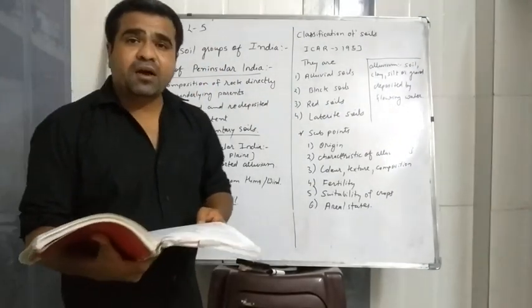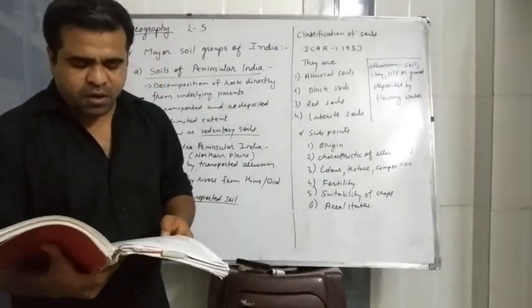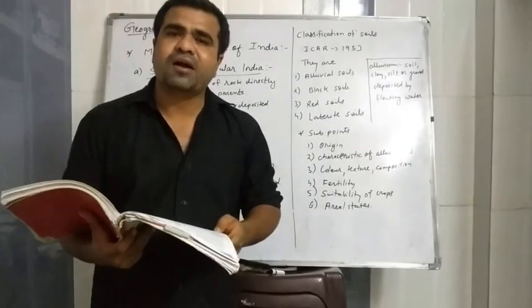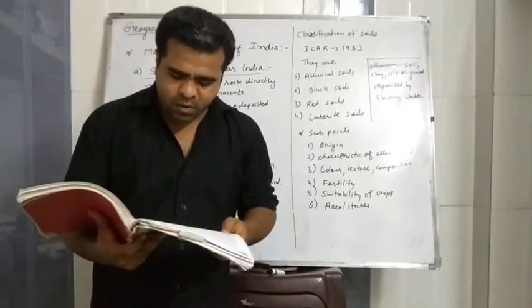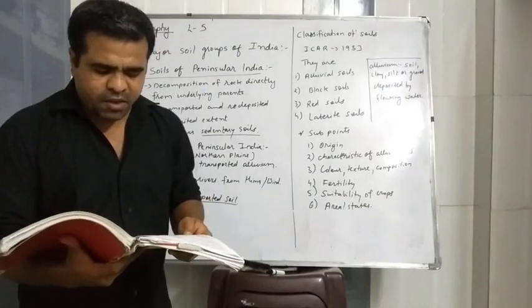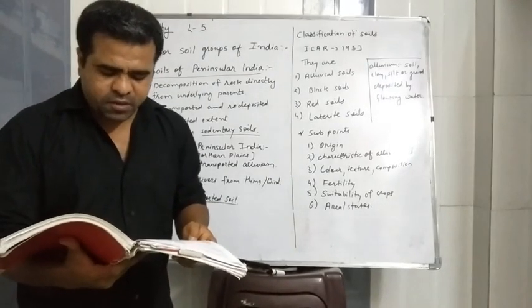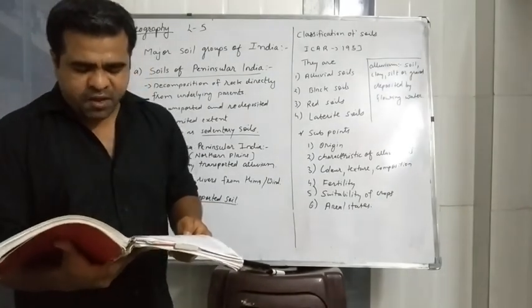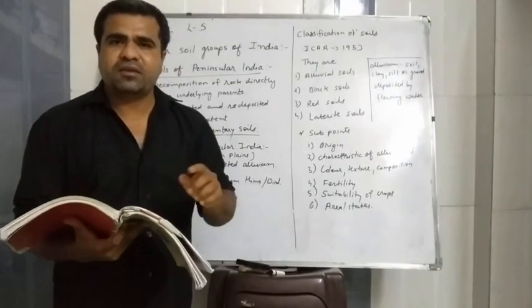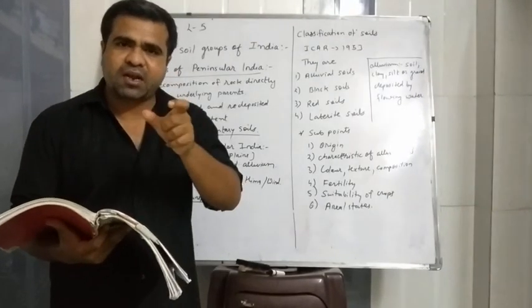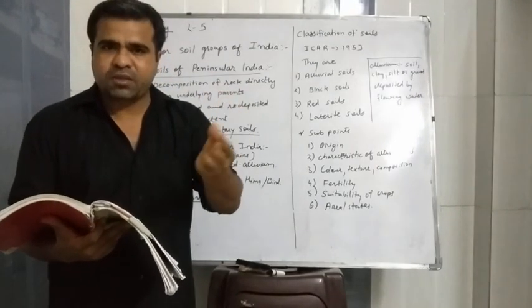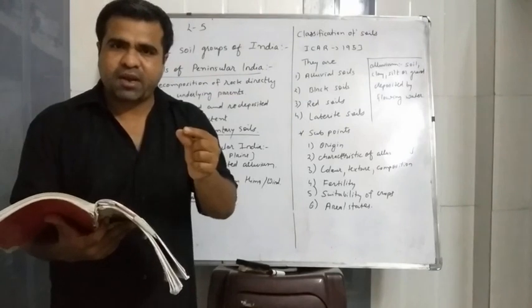In terms of color, young Khadar soil is pale brown in color. Old Bhangar soil is darker, varying from light grey to ash grey.